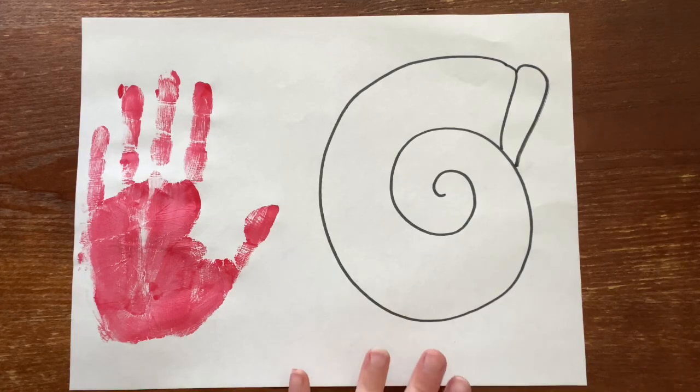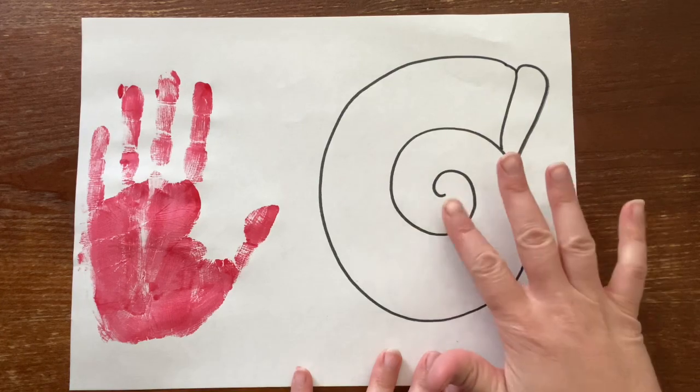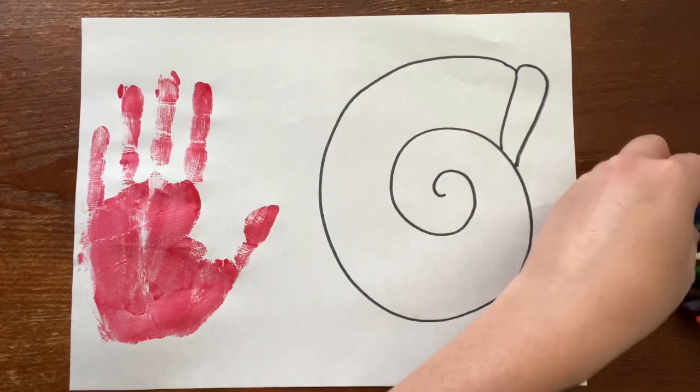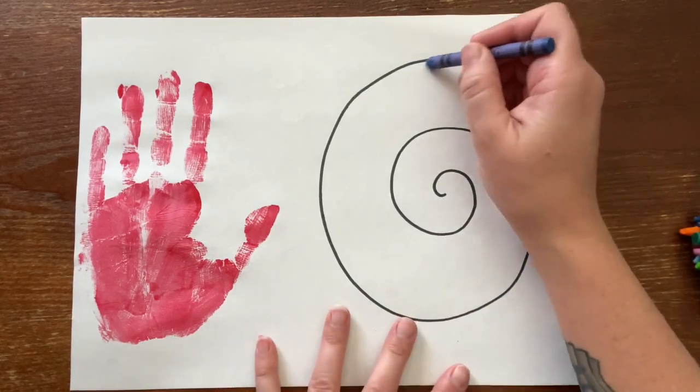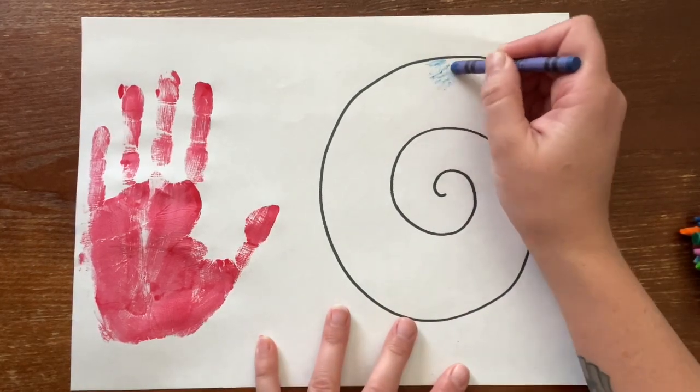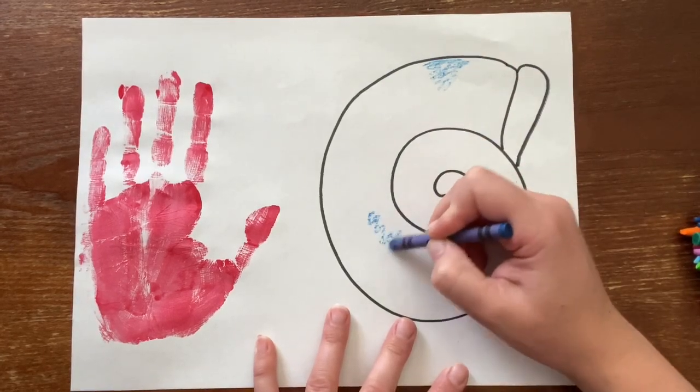So now that you have your pattern of your seashell, what we're going to do is grab some crayons. And just like in the book, we're going to start just randomly drawing little patterns all over his shell.